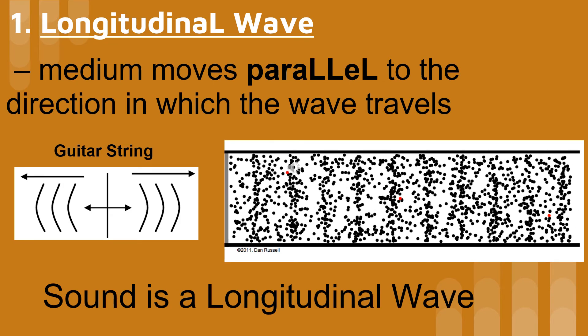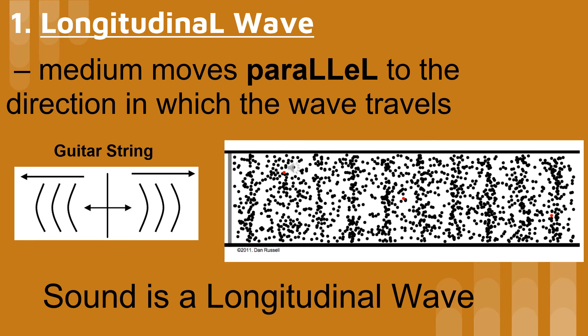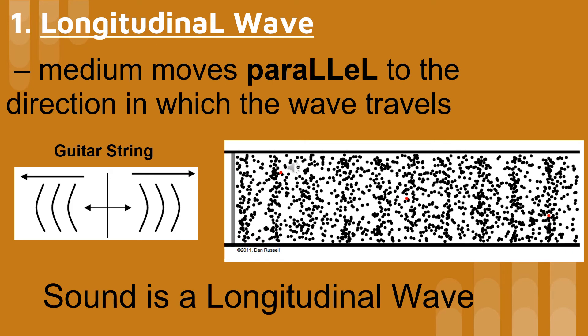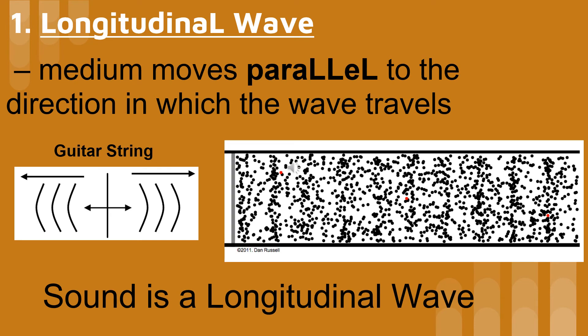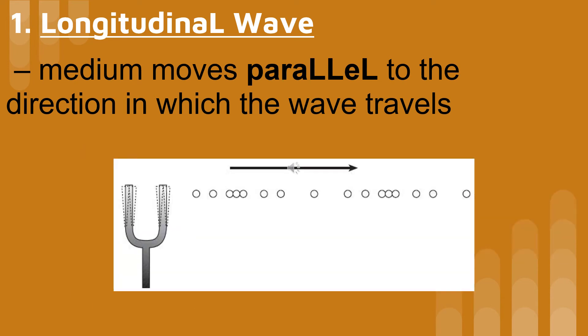The animation on the right shows how a sound wave travels through air. When a guitar string is plucked, it vibrates in the same direction that the sound travels. This illustration shows that the vibration of a tuning fork causes the air around it to compress and expand.